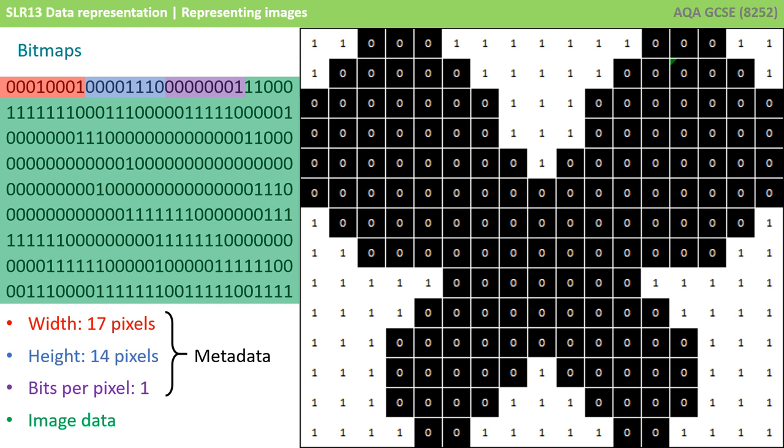In addition to the width and height, we also need to store how many bits each pixel is. In this case, just one bit is being used for the two colours.